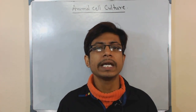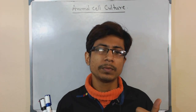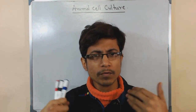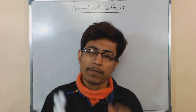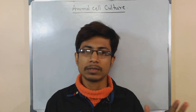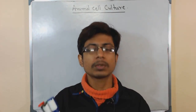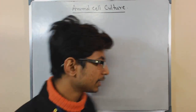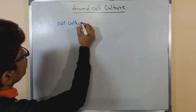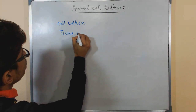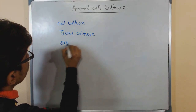Eukaryotic animal tissue culture is far more complicated than prokaryotic cell culture because eukaryotic cells have much more complex cell morphology and much more complicated growth requirements. We must know some key terminologies: what is tissue culture, what is cell culture, and what is organ culture, because these three terms will come up again and again.